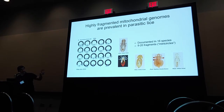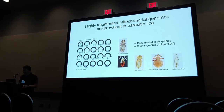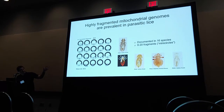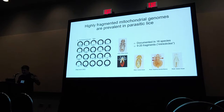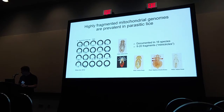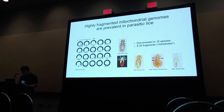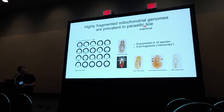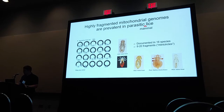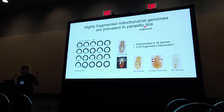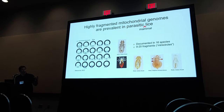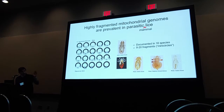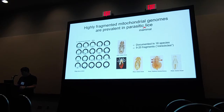An example I provide here to the left is from the human louse. They tend to be these smaller circles, and when we see this high level of fragmentation I'll refer to that as 'many circles,' because we still see that circular structure. I should include a caveat: every documented case of fragmented mitochondrial genomes in lice is from mammal lice. There are no bird lice known to have full mitochondrial genomes separated on multiple chromosomes.